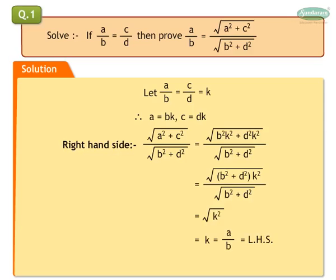Now we know K is equal to A upon B. Therefore, left hand side is equal to right hand side. Question 2.